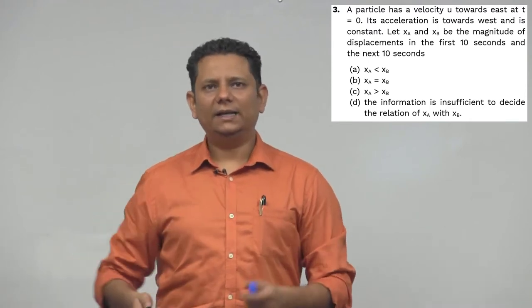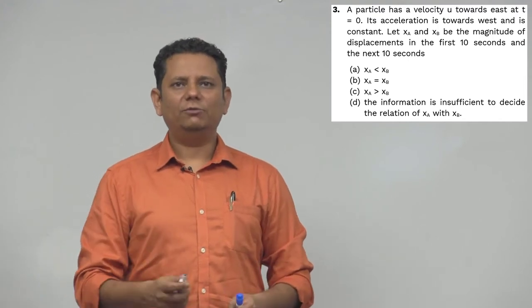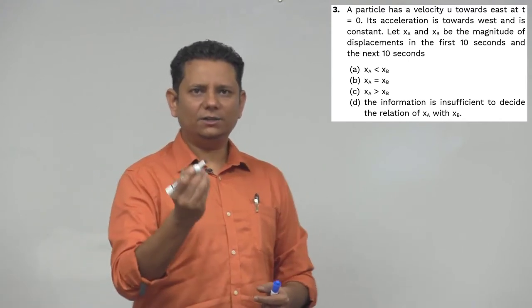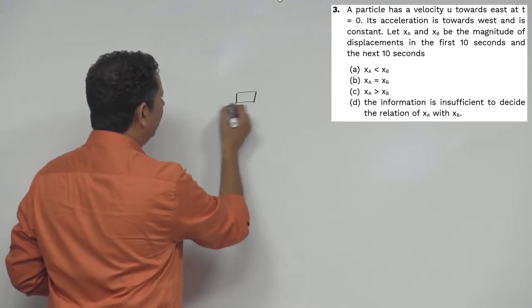We need to determine if xa is less than xb, equal to xb, or greater than xb. Or option D: the information is insufficient to decide the relation between xa and xb. Now this is your particle.